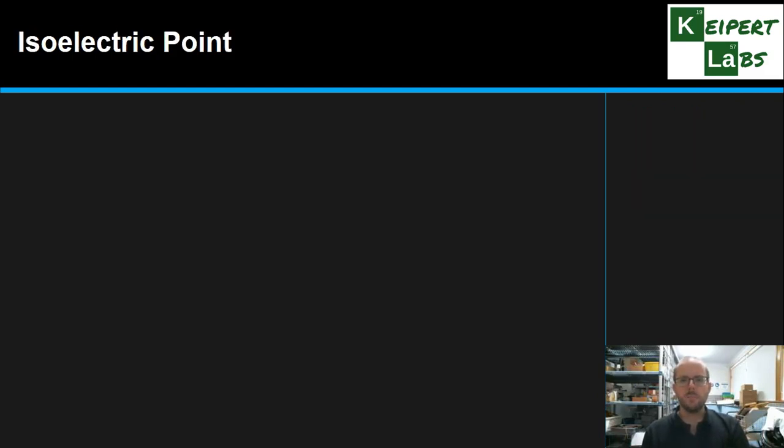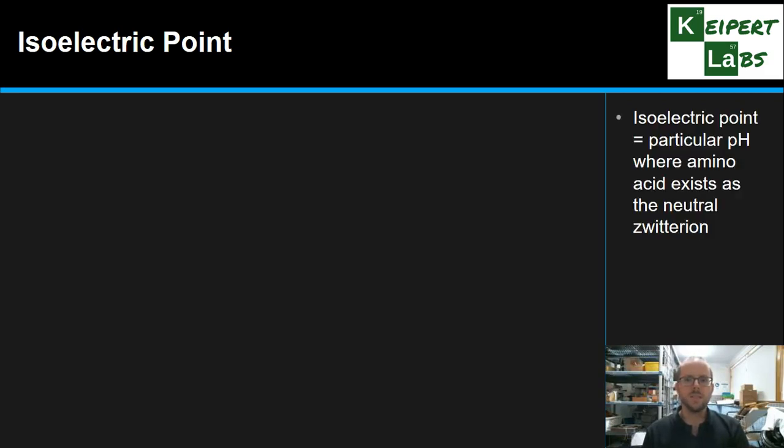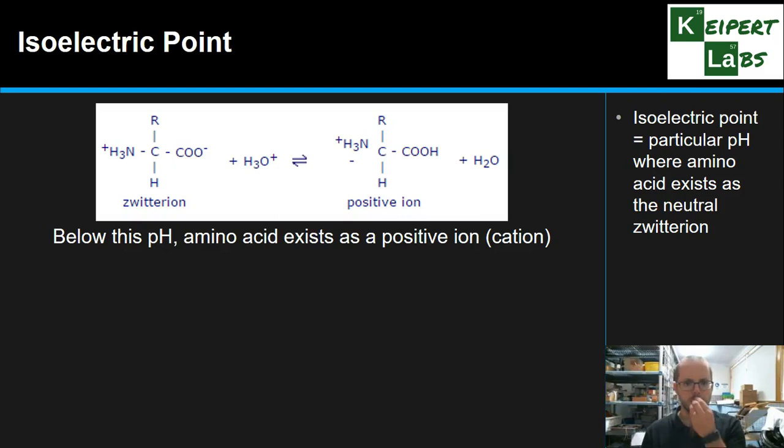And so that brings us to what we call the isoelectric point for an amino acid. That is, it's a particular pH where the amino acid exists in this neutral zwitterion form. So that's kind of the point at which we would find it. Iso being same, and so same electric, same charge or kind of neutral charge point.